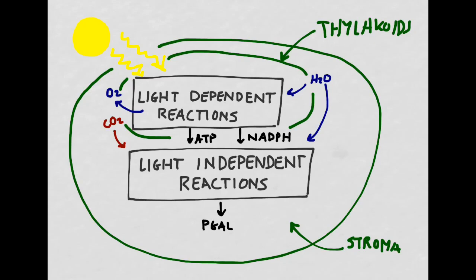The light-dependent reactions of photosynthesis occur inside the thylakoid membrane system. With the addition of water and photons of sunlight, we generate oxygen as well as two products, ATP and NADPH. ATP and NADPH ultimately enter the stroma, the other compartment inside the chloroplast, where they're combined with carbon dioxide in order to ultimately generate PGAL, a product that will ultimately become glucose.